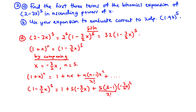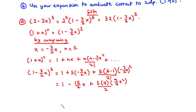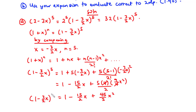Now let's simplify. We have 1 minus 15/2 · x, since 5 × 3/2 = 15/2. Then 5 × 4 × (9/4)x² / 2 simplifies to 45/2 · x², since the 4s cancel and 5 × 9 = 45. So the first three terms of the binomial expansion of (1 - 3/2 · x)^5 are: 1 - 15/2 · x + 45/2 · x².